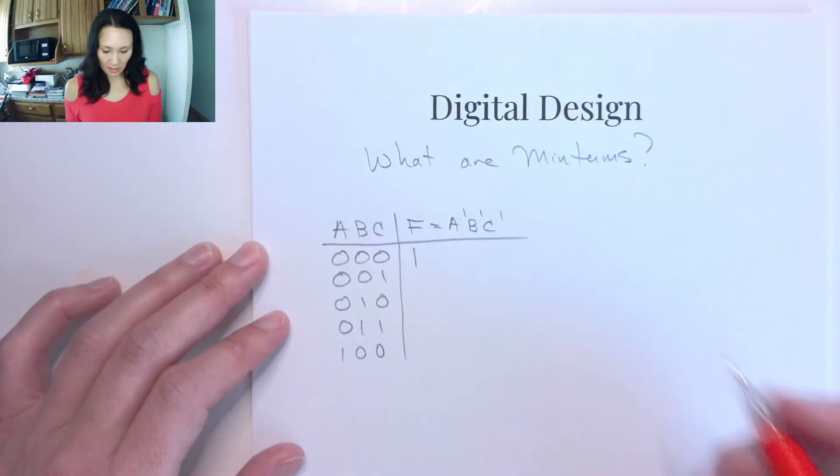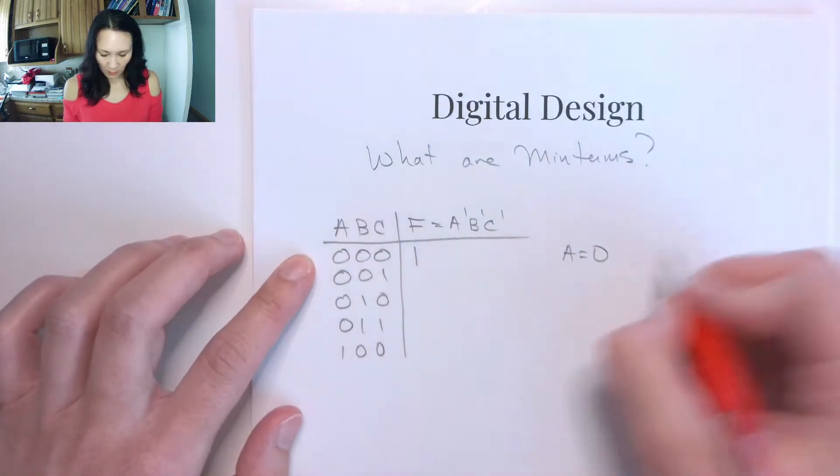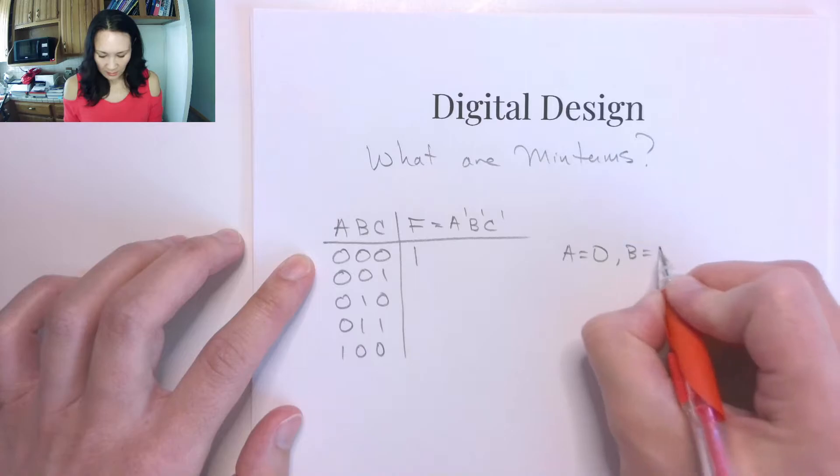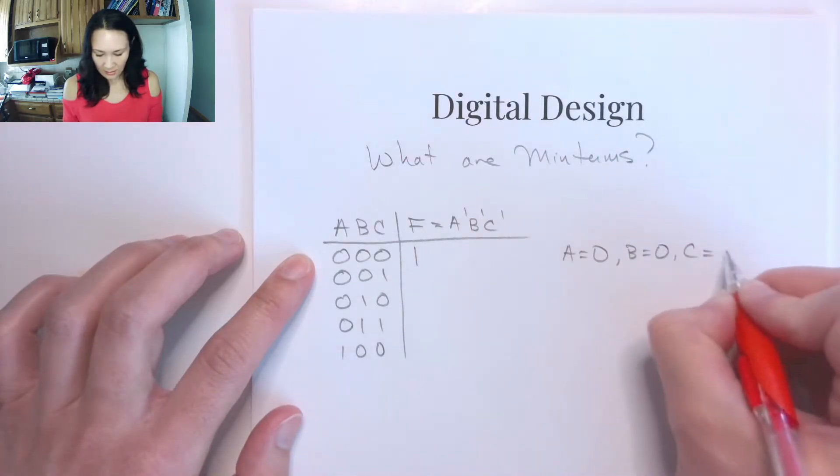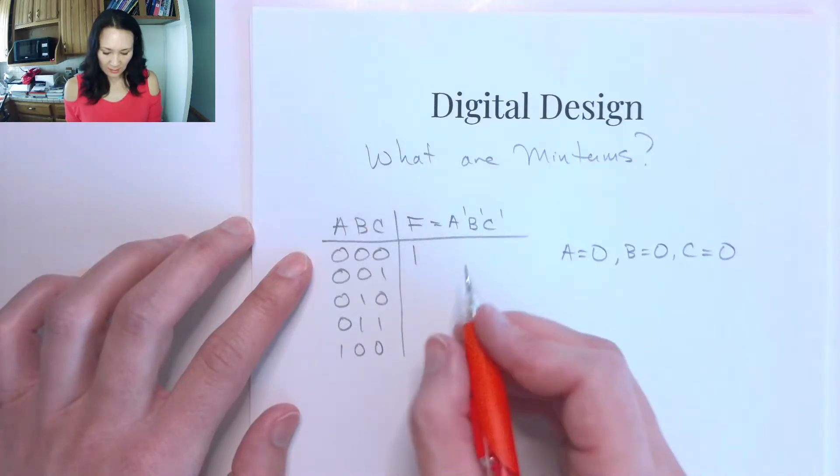I need F to be the function A naught and B naught and C naught. And the reason why is because I'm going to need, in order for us to have a 1 here, I need A to be 0, I need B to be 0, and I need C to be 0. So if my function is A naught, B naught, C naught,